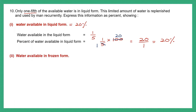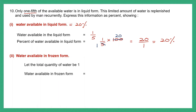Second question: we need to find the water available in the frozen form. So the remaining water is in the frozen form. Let's assume that the total quantity of water is 1. The water available in the frozen form will be 1, which is the total quantity of water, minus the water that is available in the liquid form. If we subtract liquid water from the total, we get the water in the frozen form.